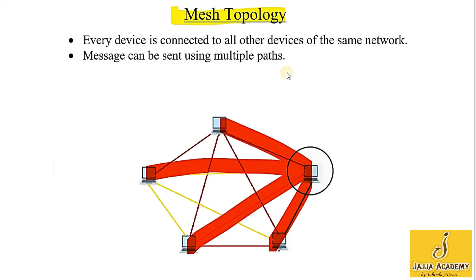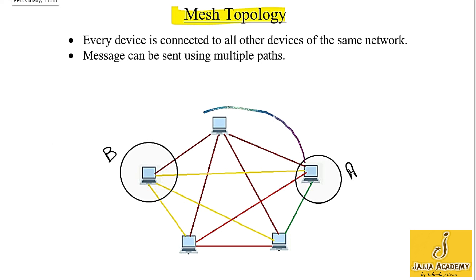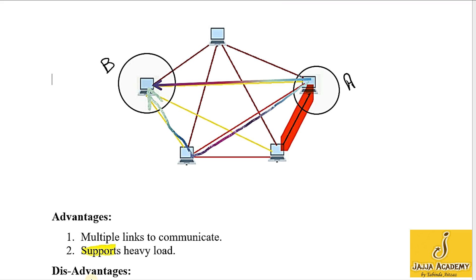In the mesh topology, messages can be sent using multiple paths. For example, if A wants to communicate with computer B, there are many paths from node A to node B — A can use one path, or the message can be sent using another path, and many other paths as well. That is the major advantage of mesh topology: there are multiple links to communicate, so if one channel or link is damaged, computer A can still send its message to computer B using another channel. The second advantage is it supports heavy load.